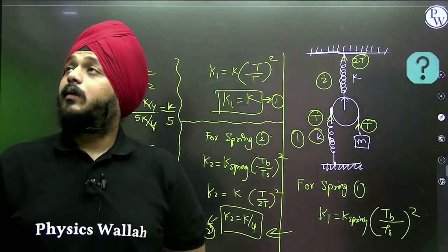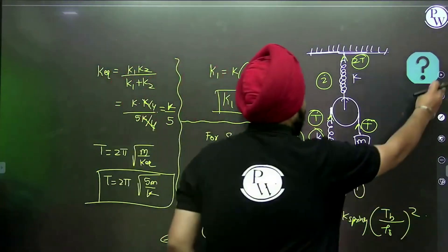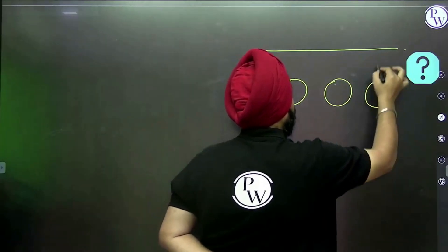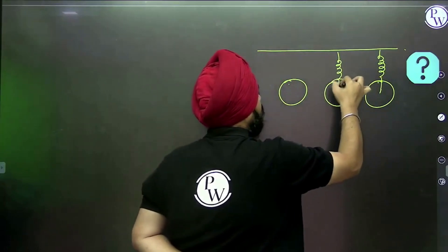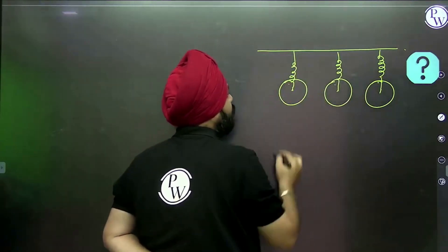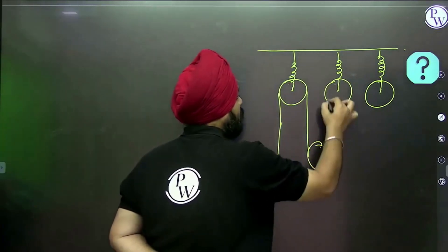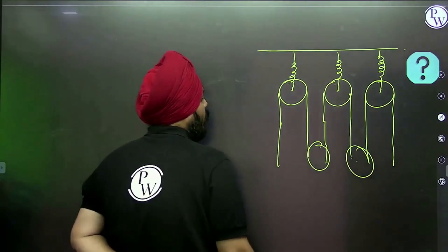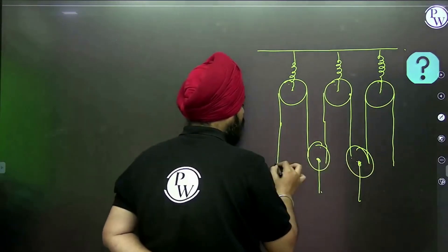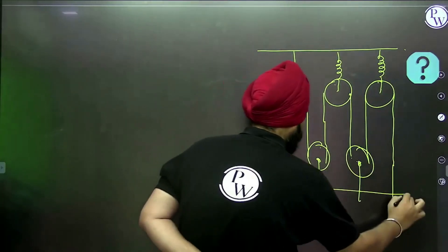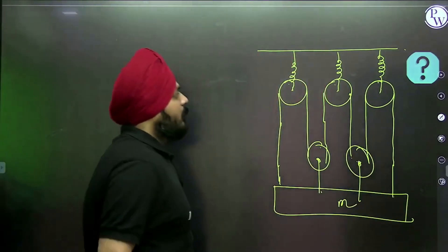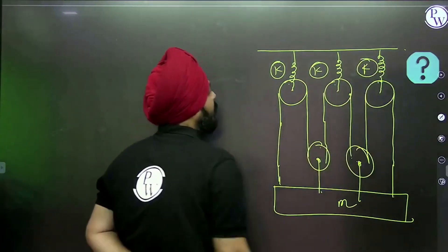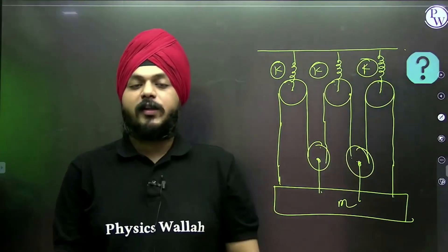That's the shortcut! Let's take another sum to understand this. Suppose this arrangement is given with three springs, each of spring constant K. If a gentle push is given, calculate the time period for the SHM of the block. This is a most weird arrangement — I am quite sure that if this kind of arrangement appears in JEE Mains or Advanced, using the regular method you will fail to apply it.